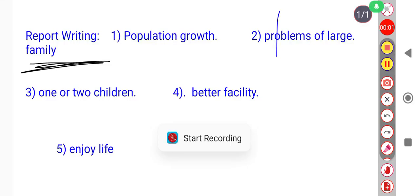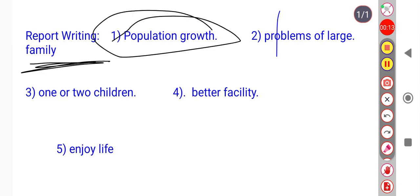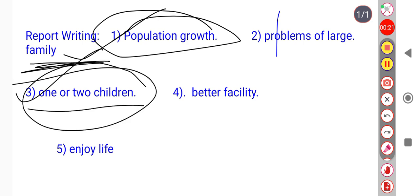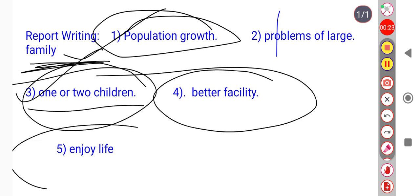Hello and welcome to everyone. Today we will learn how to write report writing. Question number first: Write with the help of the words given below, produce a write-up on the advantages of small family. Some points are given: population growth, problems of large family, one or two children, better facility, and enjoy life. So let's understand and get started.